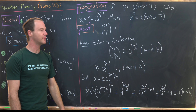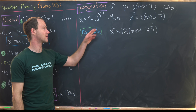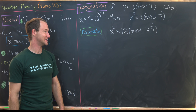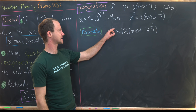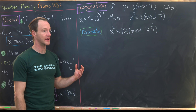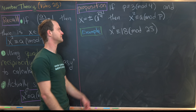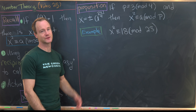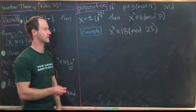Now let's do an example of this in action. We're going to solve the congruence x² ≡ 18 mod 23. Before we get going, let's calculate the Legendre symbol to make sure there's a solution in the first place. We'll take the opportunity to practice calculating the Legendre symbol with quadratic reciprocity.